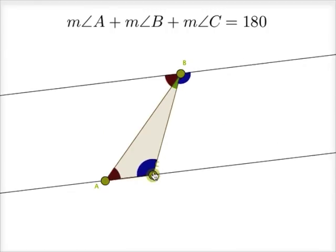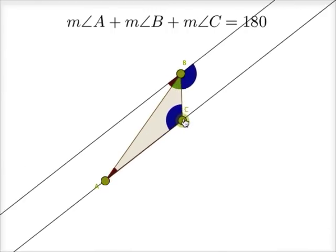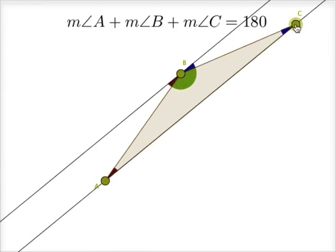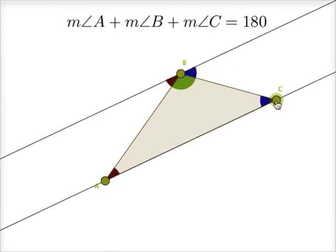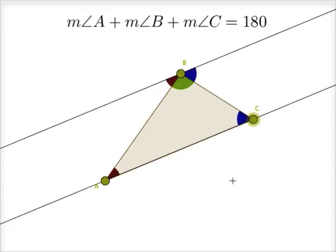It doesn't matter what the triangle looks like—the original triangle can be obtuse, right, scalene, or isosceles. It will always be the case that those three angles, the red, the green, and the blue, add up to 180 degrees.